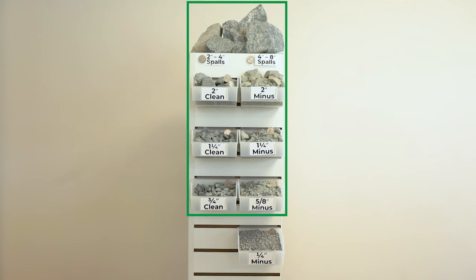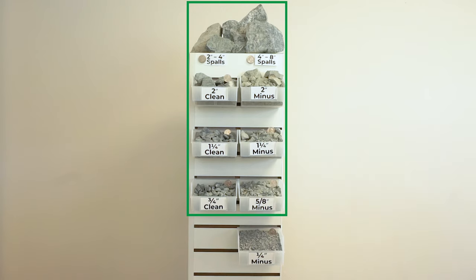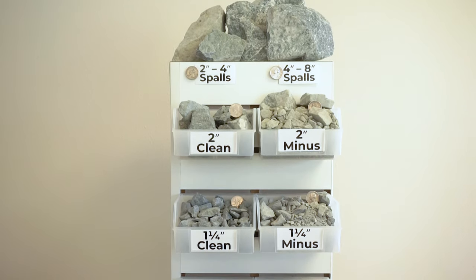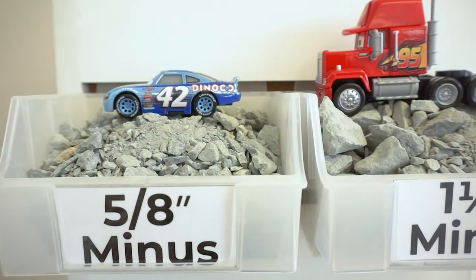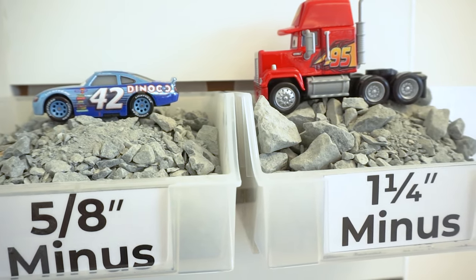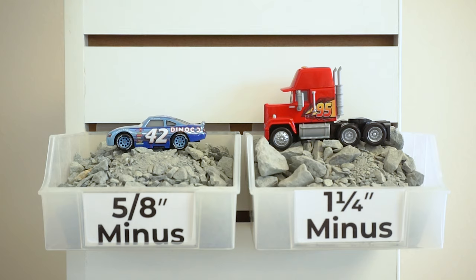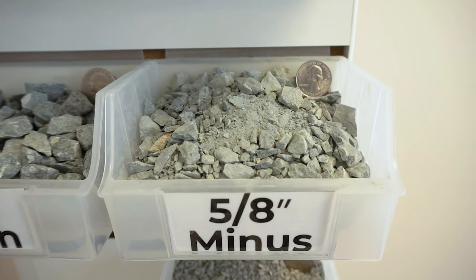These rock products are often used to build roads or to rehab existing gravel driveways, but they can be used for other purposes too. Generally, bigger rock creates a solid base. Smaller rock creates a stable driving surface. Our most popular driveway gravels are five-eighths minus and inch and a quarter minus. These are typically the best choices for people who are refreshing existing driveways. Try inch and a quarter minus if you have heavy traffic or large vehicles. Use five-eighths minus for smaller vehicles and less traffic.